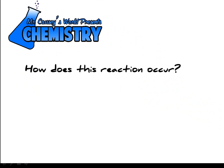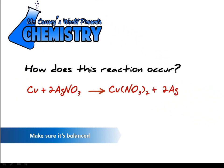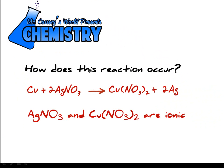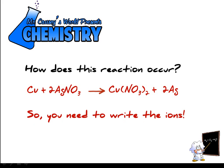How does this reaction occur? Copper and silver nitrate giving us copper 2 nitrate and silver. Well, silver nitrate and copper nitrate are both ionic and so we need to write the ions.